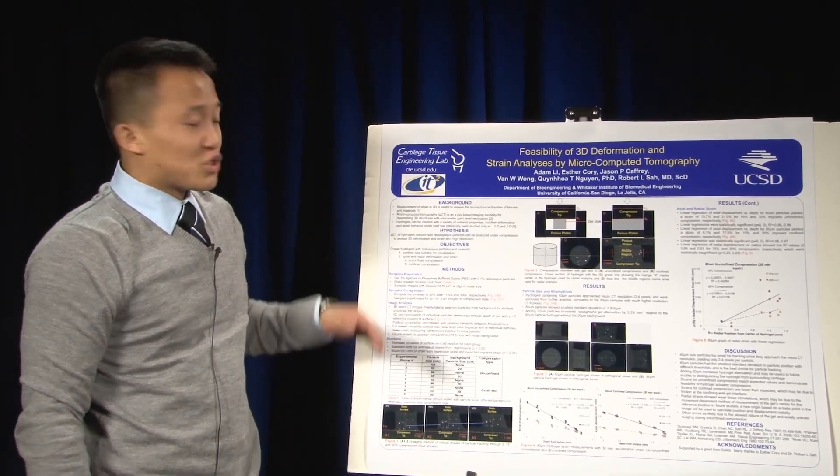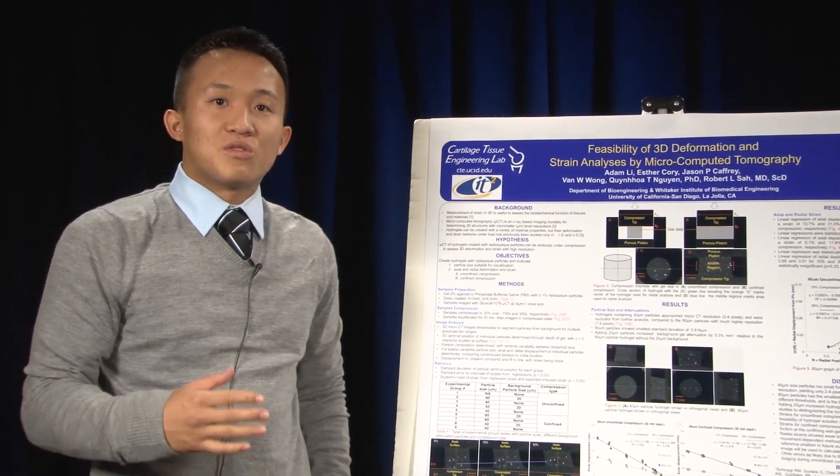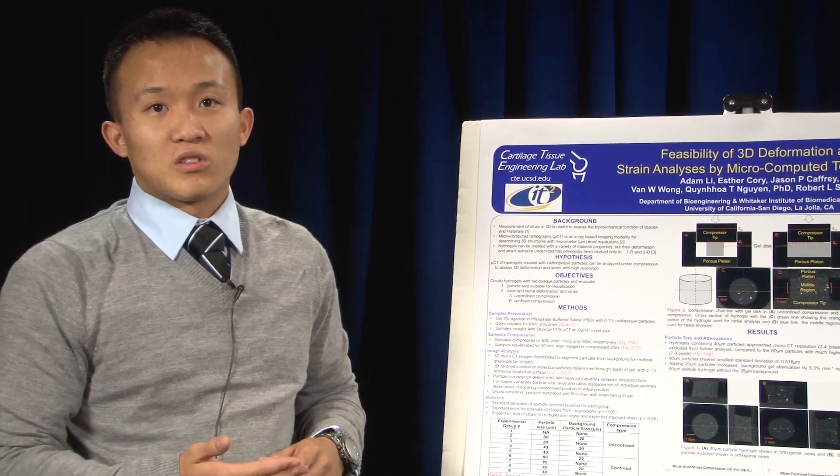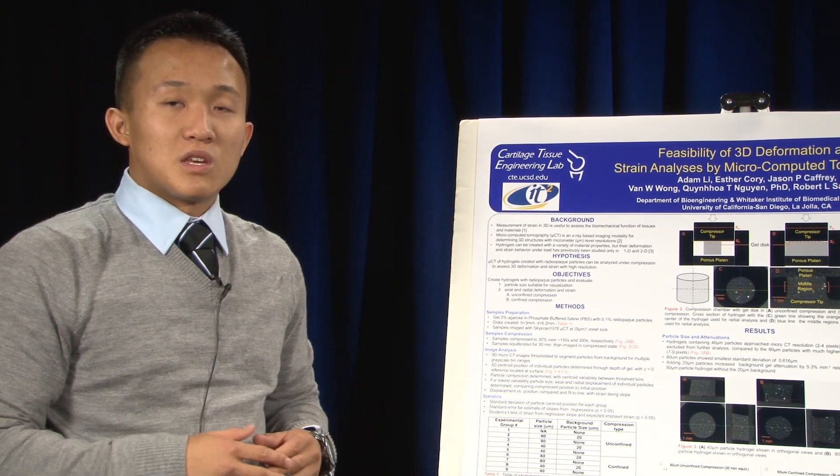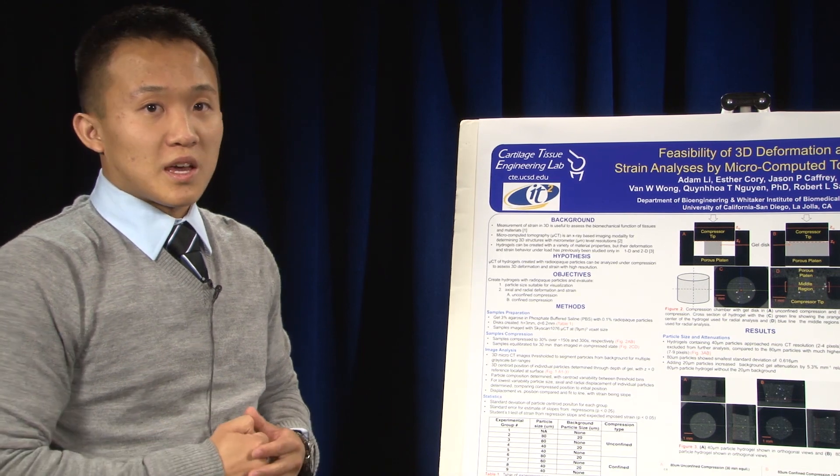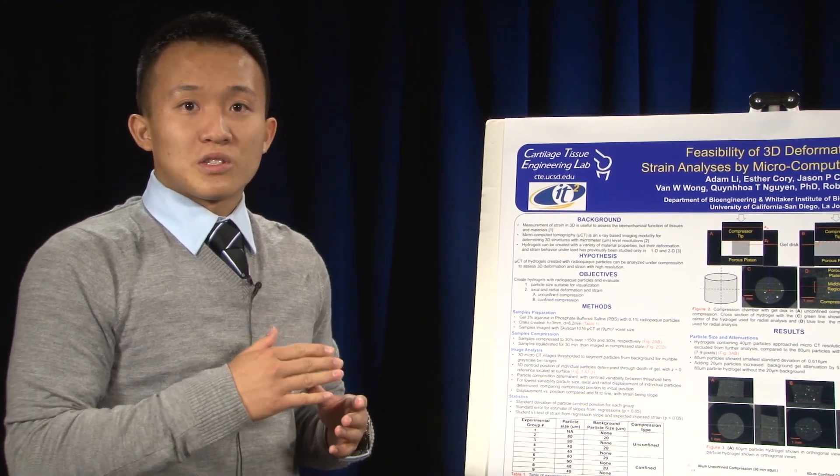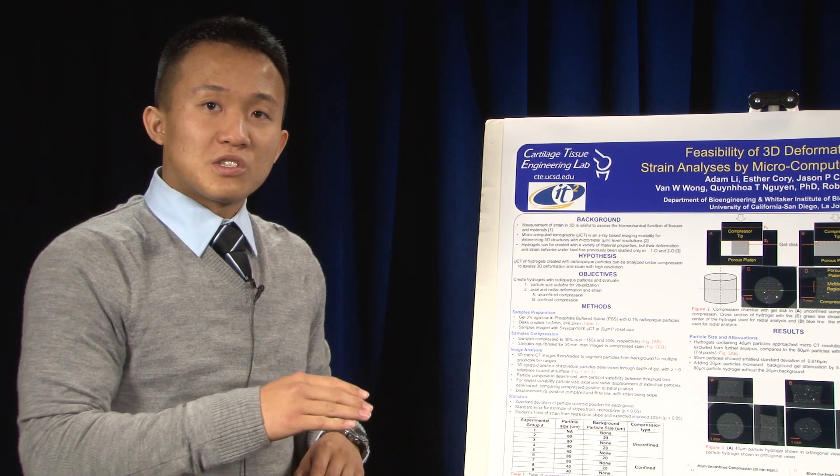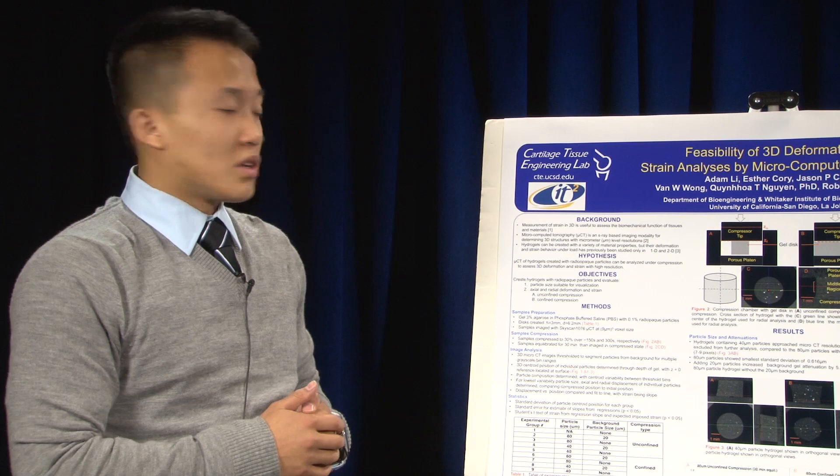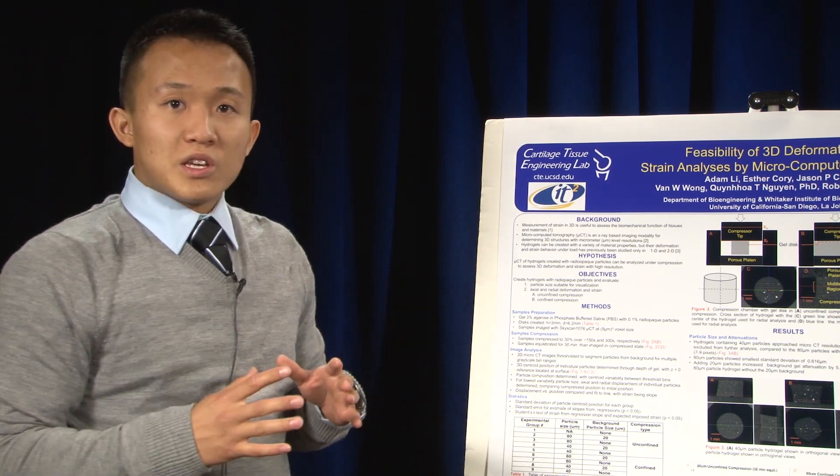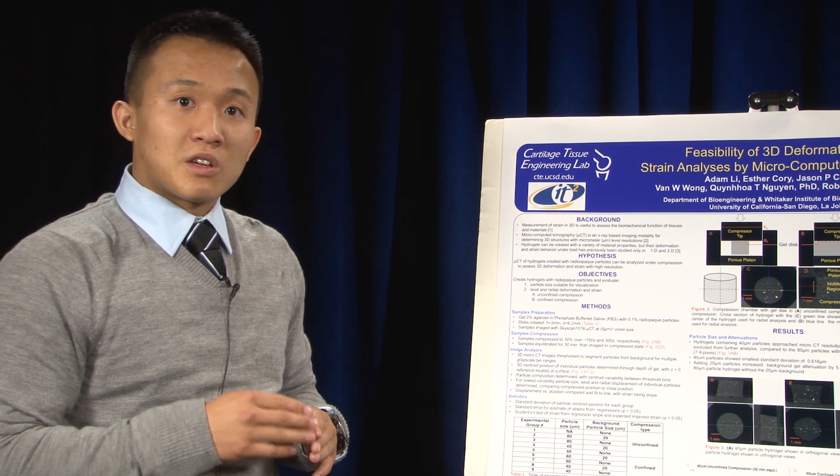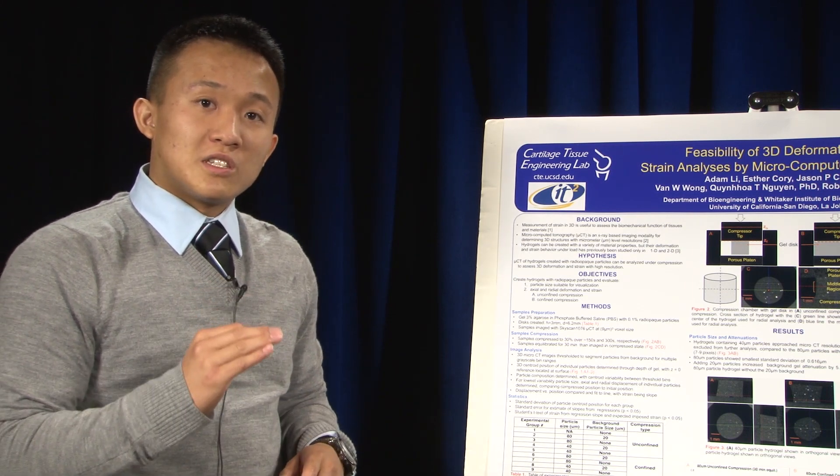Measurement of strain in three dimensions is useful to assess the biomechanical function of various tissues such as your heart, your cartilage, or your muscles. Now microcomputed tomography is an x-ray based imaging system that can take snapshots of 2D image slices and essentially give you 3D information on the micrometer level scale. It's really precise and accurate and it can be used to track really tiny details.